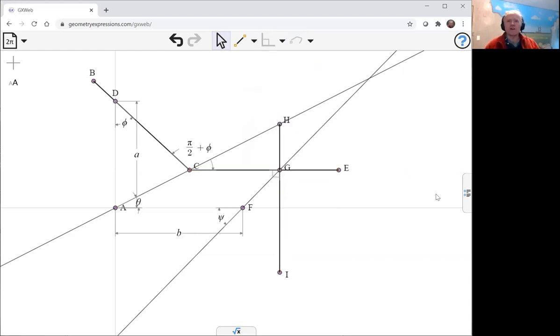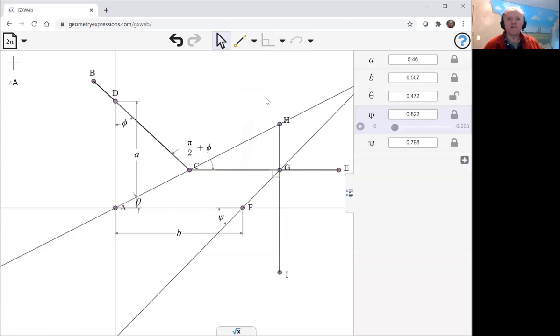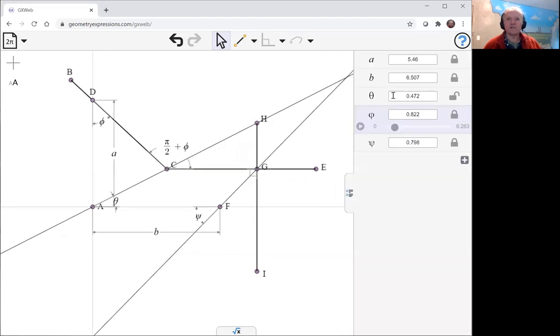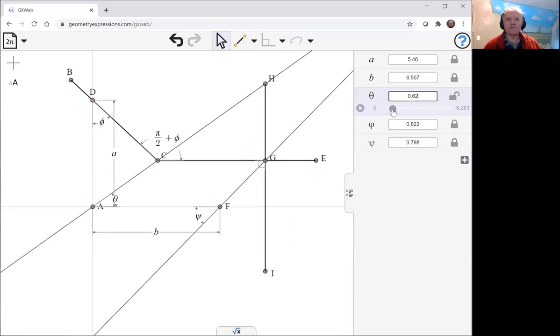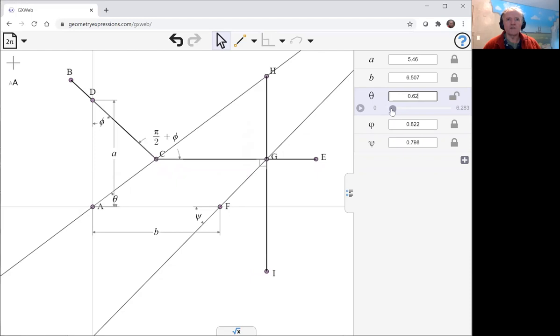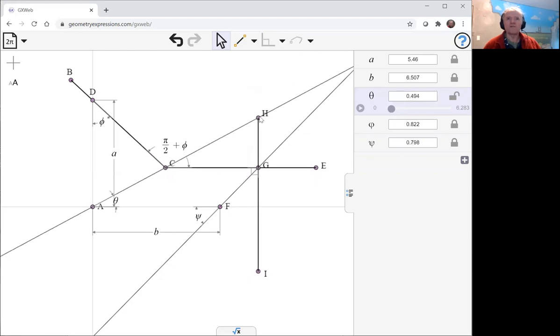So with all that we can actually move our mechanism by theta and watch what happens. The point which draws the curve is h, and so if we look at the locus as theta varies, that gives us our curve.